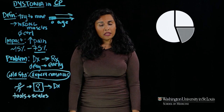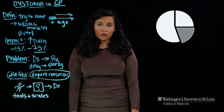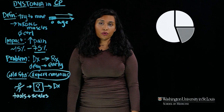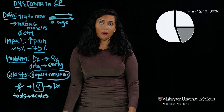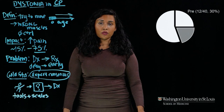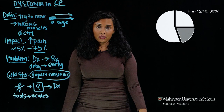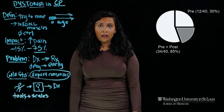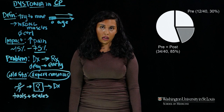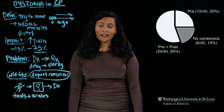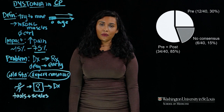We had three movement disorders experts with specific expertise in cerebral palsy look at 40 videos of people who were walking who had CP, spasticity, and a type of brain injury called periventricular leukomalacia. Before the experts had consensus-building discussion, only 30% of videos had experts reaching consensus. After discussion, experts agreed on 85% of videos. But highlighting the difficulty of diagnosis, in still six out of 40 videos, experts didn't reach consensus.